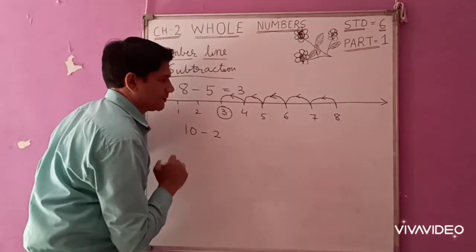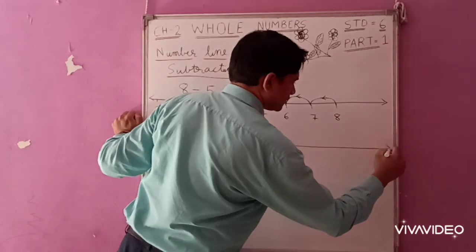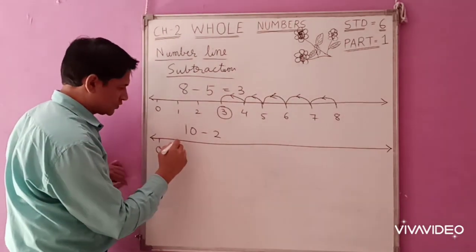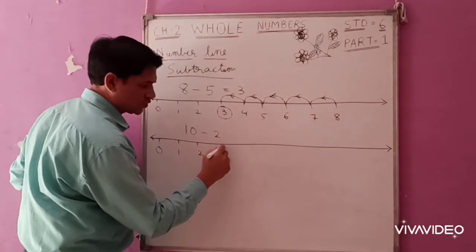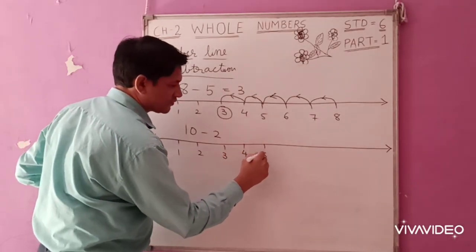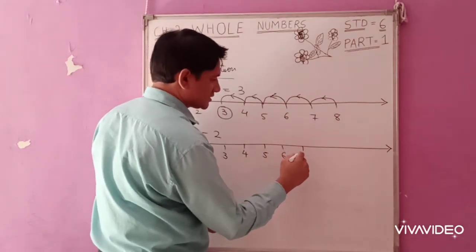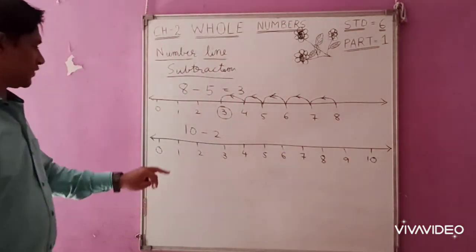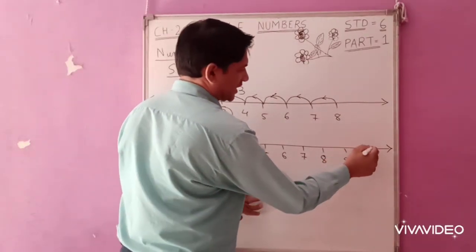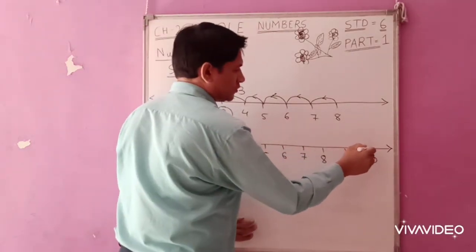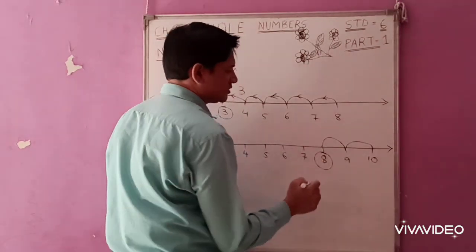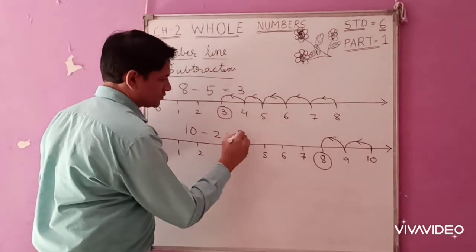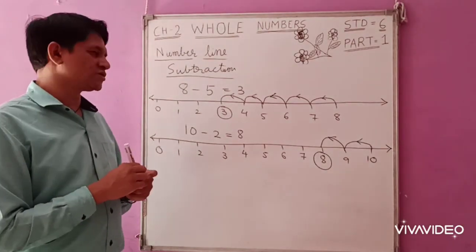Next example: 10 minus 2. Draw the number line with arrows on both sides; the maximum number is 10: 0, 1, 2, 3, 4, 5, 6, 7, 8, 9, and 10. Our starting number is 10, and we subtract 2 by moving left: 1, 2. So 10 minus 2 is equal to 8. That is subtraction on the number line.